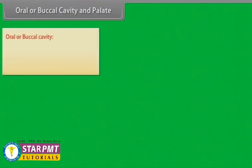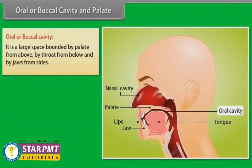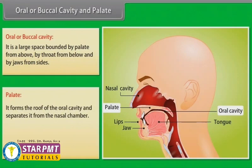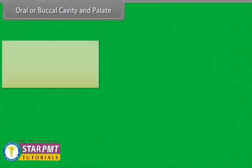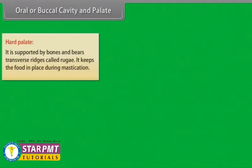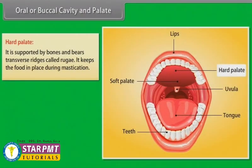The oral or buccal cavity is a large space bounded by the palate from above, by the throat from below, and by the jaws from sides. The palate forms the roof of the oral cavity and separates it from the nasal chamber. It is divided into two parts: the hard palate, which is supported by bones and bears transverse ridges called rugae, and keeps the food in place during mastication.